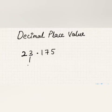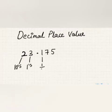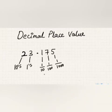Considering the whole number part: three is in the units place (ones place) and two is in the tens place. Similarly, in the decimal part, one is in the one-tenths place and seven is in the one-hundredths place, and five is in the one-thousandths place.